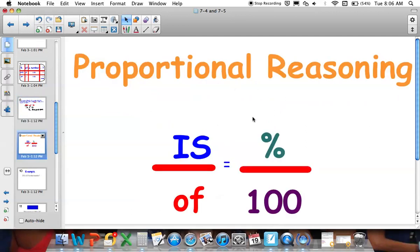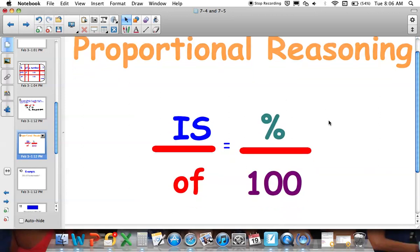Next, proportional reasoning. You need to write this down. Make sure you do. Pause the video to write it down. Write down the is over of is equal to percent over 100. Now, we've been working with proportions, and your project is also about proportions. So, this should be familiar. So, make sure to write this down. Is of percent 100.